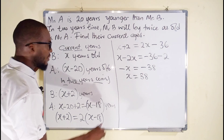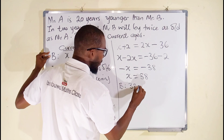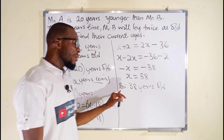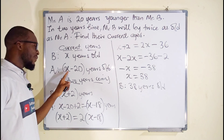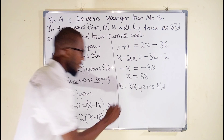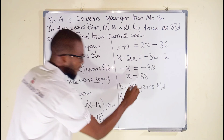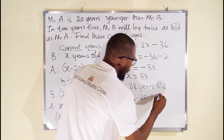This means Mr. B is currently 38 years old. So what is the age of Mr. A? It is x minus 20, and since x is 38, we have 38 minus 20, which equals 18. So Mr. A is 18 years old.